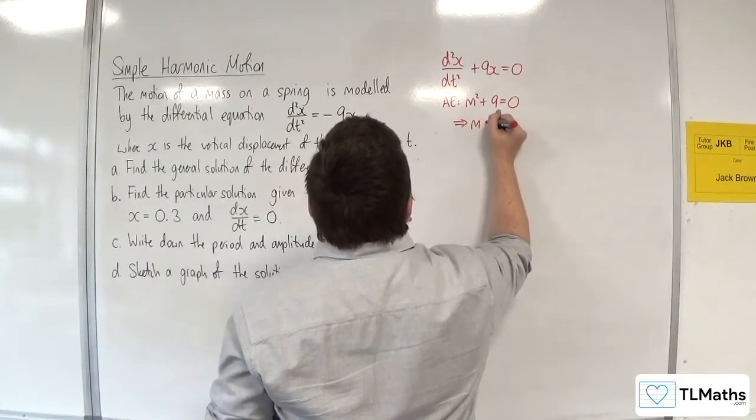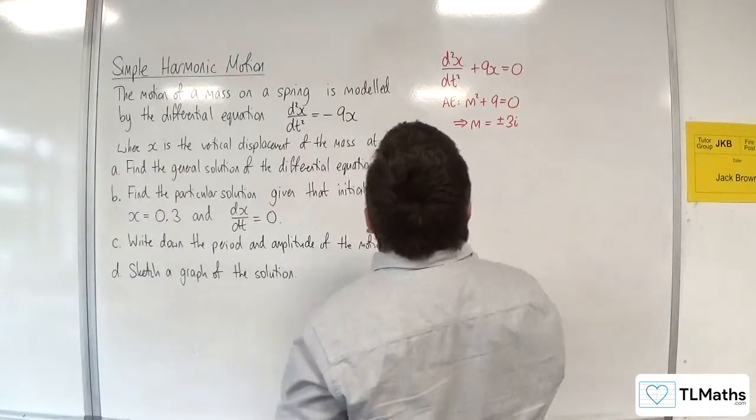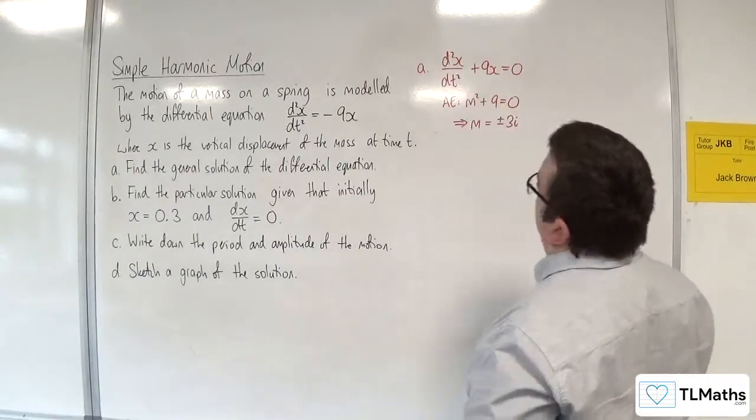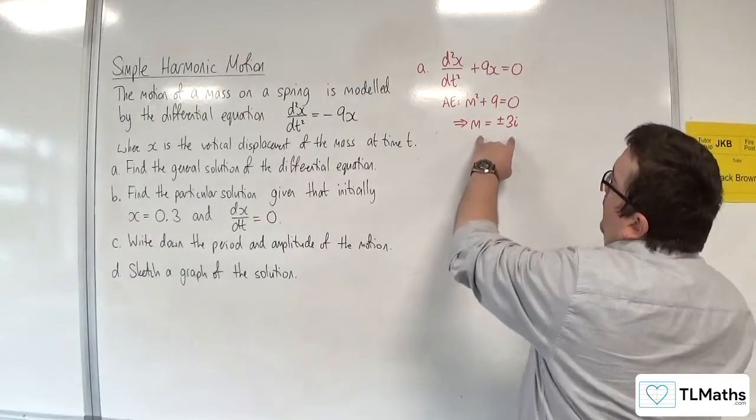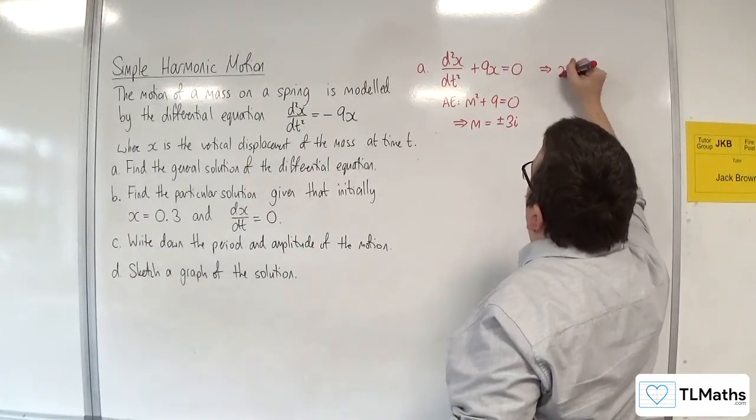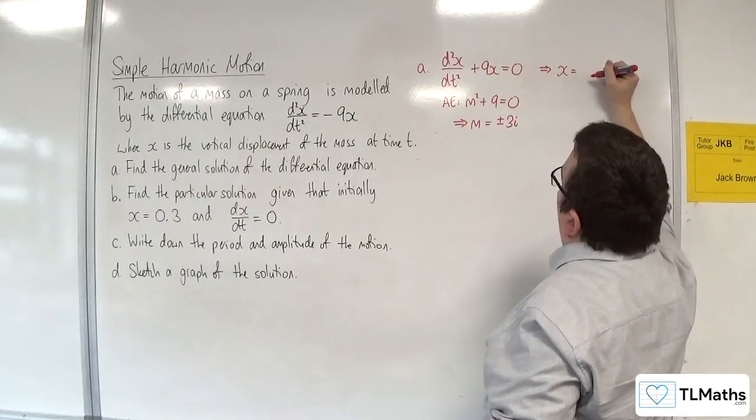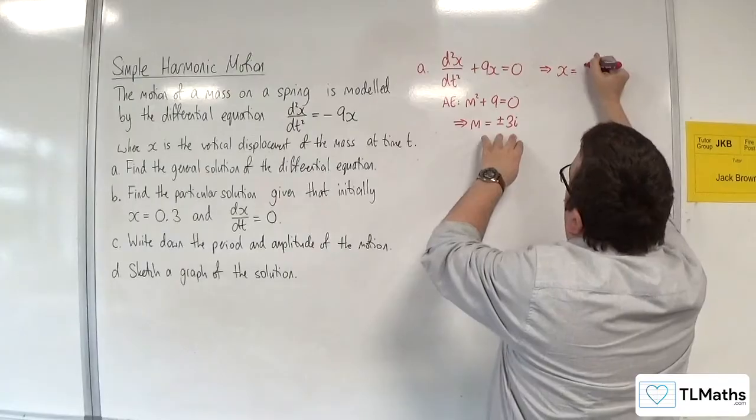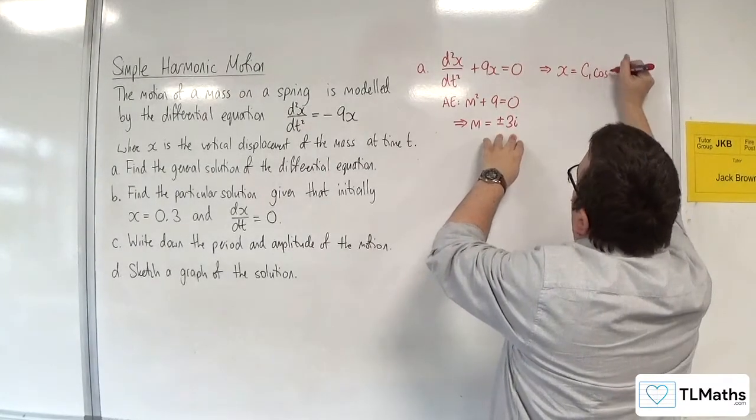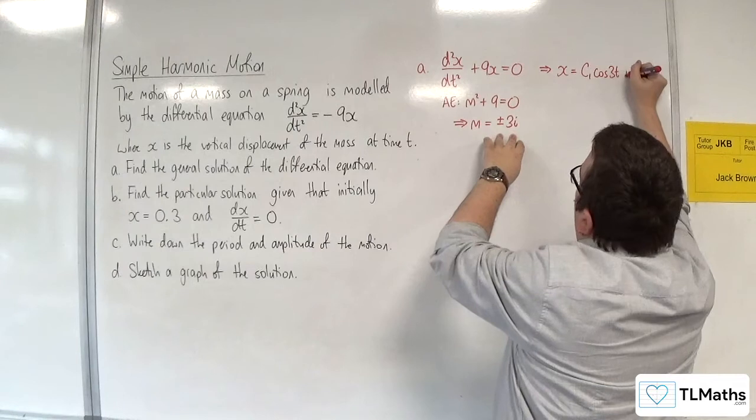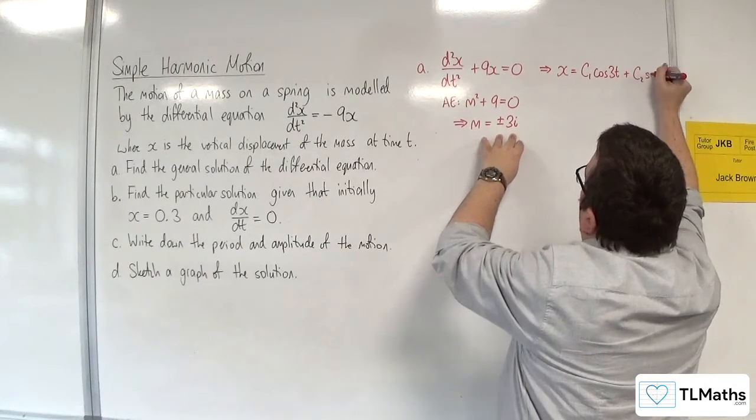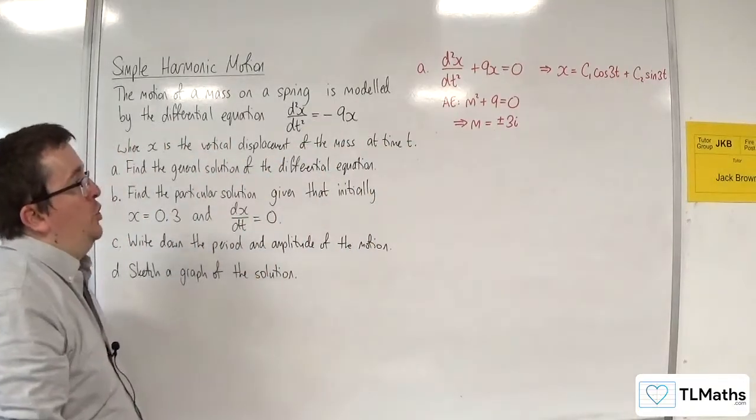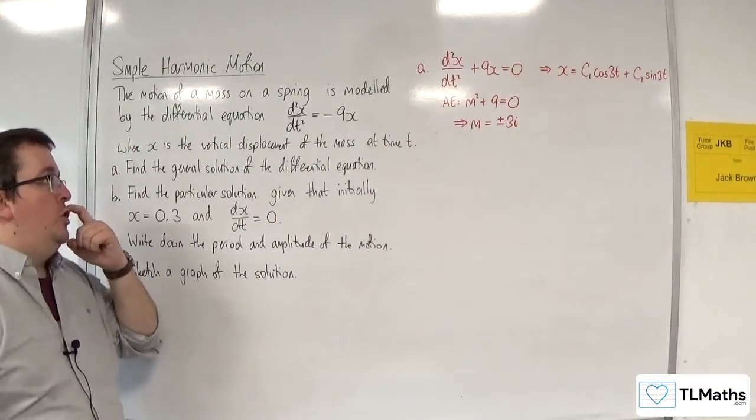So m is going to be equal to plus or minus 3i. So this is our part here. So given that, that means that x is going to be equal to, if we've got plus or minus 3i, we're going to have c1 cosine of 3t plus c2 sine of 3t. And so that's the general solution of my differential equation.